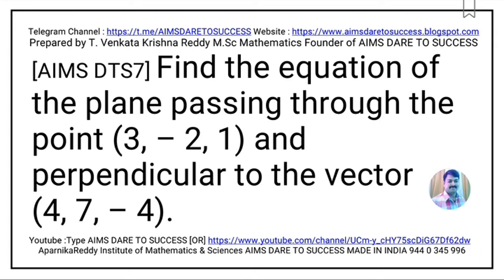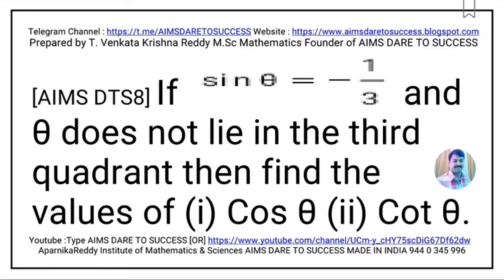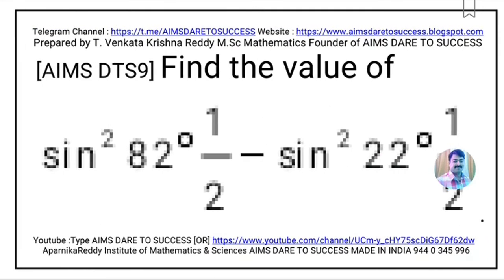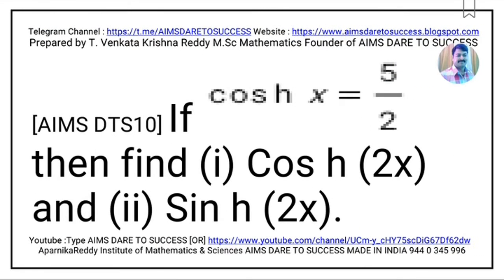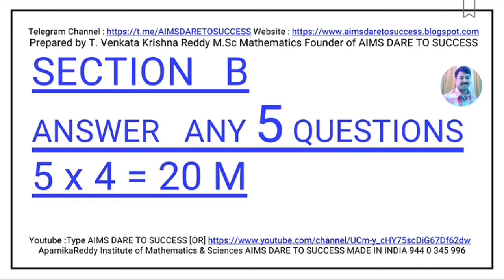Now moving to question number 10: If cosh(x) = 5/2, then find the values of cosh(2x) and sinh(x). This is from Section A, Hyperbolic Functions. Now I am moving to Section B.